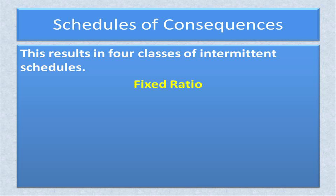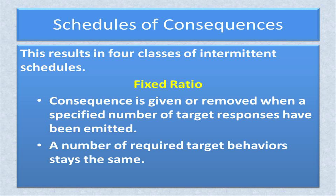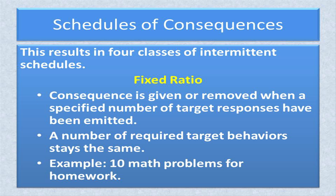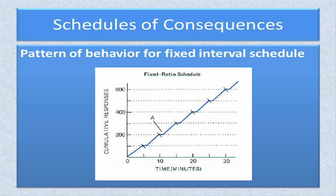The third type of schedule is labeled a fixed ratio schedule. In this schedule, a consequence is given or removed when a specific number of target responses are emitted. A continuous schedule is really a fixed ratio schedule with the number of correct responses set at one. The number of target behaviors that must be emitted before a consequence is added or subtracted is always the same. An example is the completion of ten math problems for homework — reinforcement is not added until all ten math problems are completed correctly. The pattern of behavior for a fixed ratio schedule shows a steady rate of behavior with a rest period after the consequence is delivered, and the rate of responding is higher for a fixed ratio schedule than for a variable interval schedule.